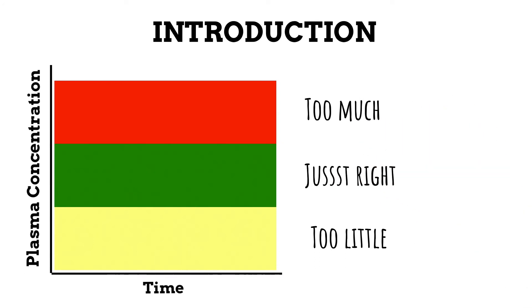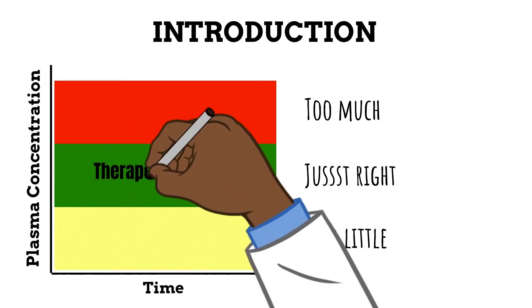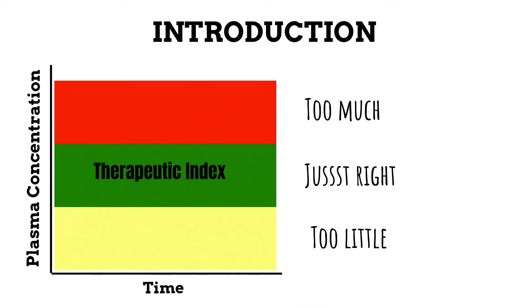And then you have the green zone, which is just right. So this is where you want to be, and this is what's known as the therapeutic index.